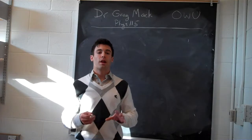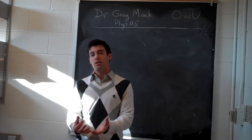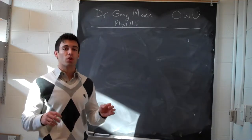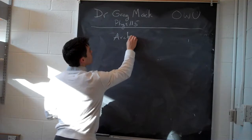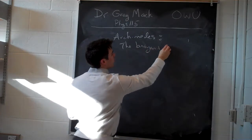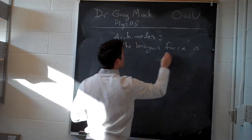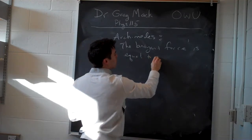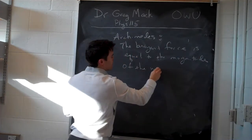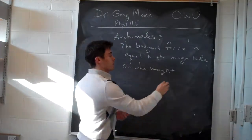Thinking about forces, we can now analyze what happens to an object that is inside of a fluid — meaning if it's submerged inside that fluid, or if it's actually floating on top of it. The first thing to think about is Archimedes' Principle, which says that the buoyant force acting on an object is equal to the magnitude of the weight of the fluid displaced by that object.